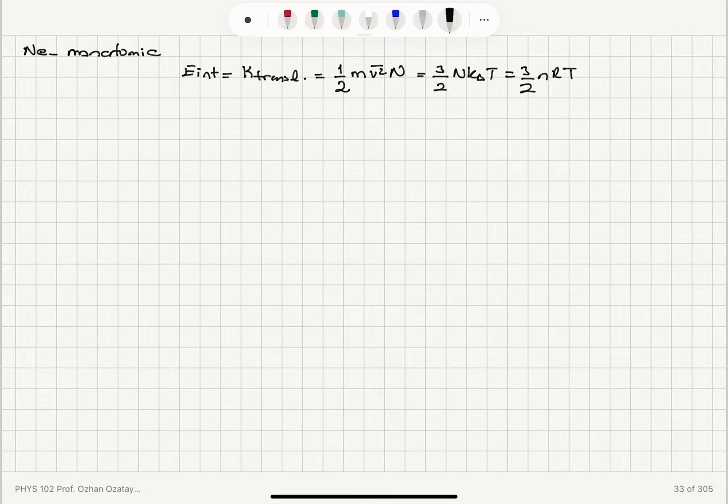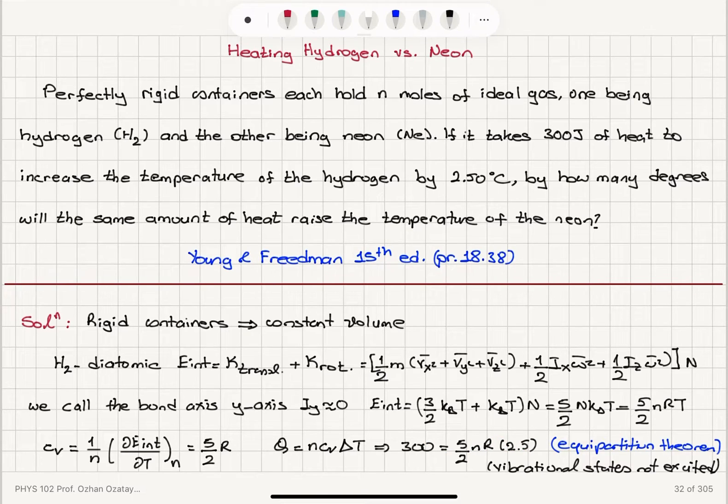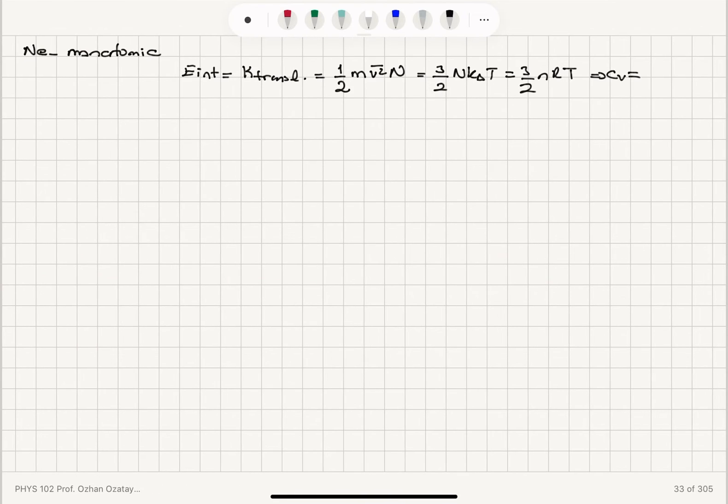And using the same formula that I have here, 1/n dE internal dT at constant number of moles, I find Cv is equal to 3/2 R. So Q, the heat added is number of moles, molar specific heat at constant volume delta T.